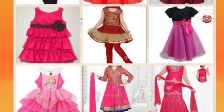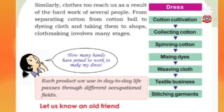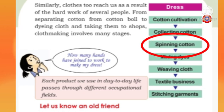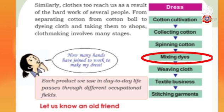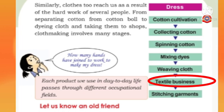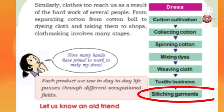Have you understood? Shall we read all the steps once more? The making of clothes: First step - cotton cultivation. Second - collecting cotton. Third - spinning cotton. Fourth step - mixing dyes. Fifth - weaving cloth. Sixth - textile business. And the last one - stitching garments.